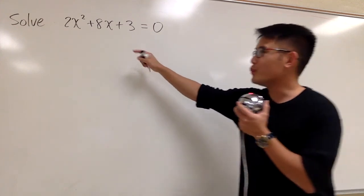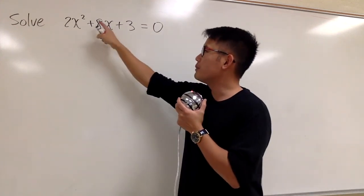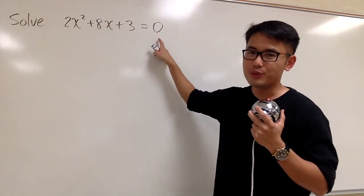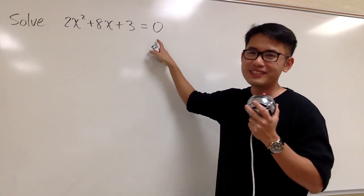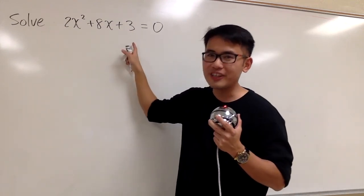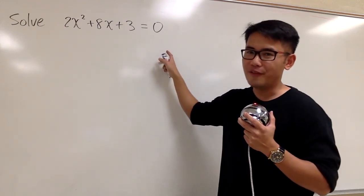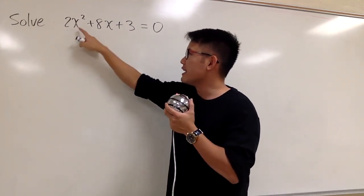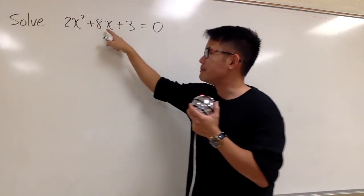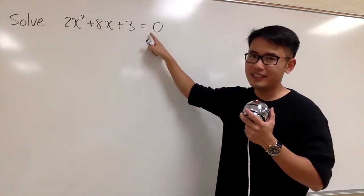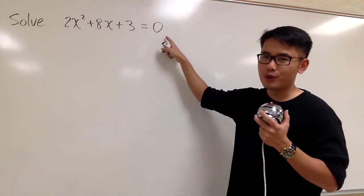Here we are going to solve this equation. We have 2x squared plus 8x plus 3 is equal to 0, and notice that this is the quadratic equation in the standard form, because we have ax squared plus bx plus c is equal to 0.